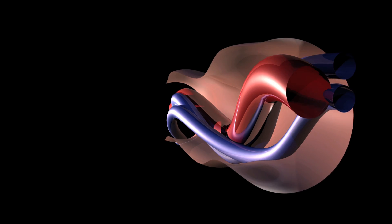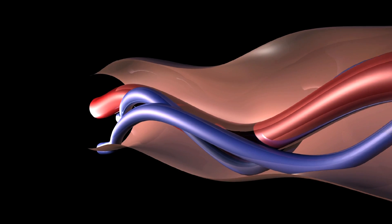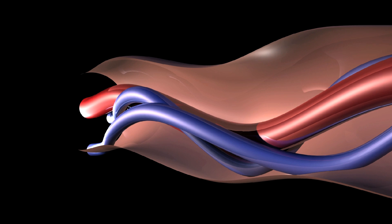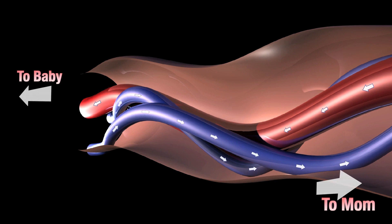So the umbilical cord has two arteries in one vein. Opposite of how the body works after the baby's born, the arteries carry the wastes from the baby back to the mother, and the vein carries the oxygenated blood from the mother to the baby. So the vein is the larger vessel. It's more thin-walled, and so it's more easily compressed.